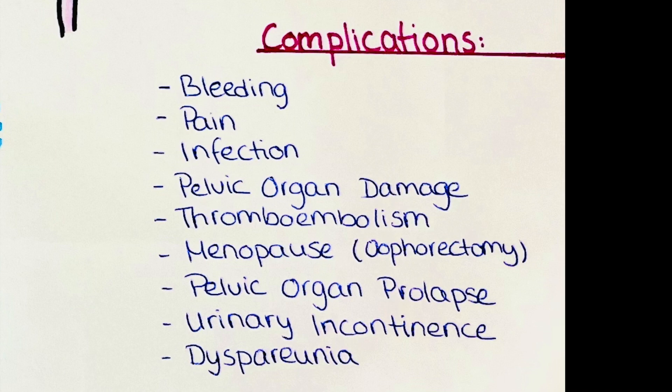If the ovaries are removed during a hysterectomy, the patient will go into menopause almost immediately. This can cause symptoms such as hot flashes, night sweats, and vaginal dryness. Some long-term complications of a hysterectomy include pelvic organ prolapse, urinary incontinence, and dyspareunia.